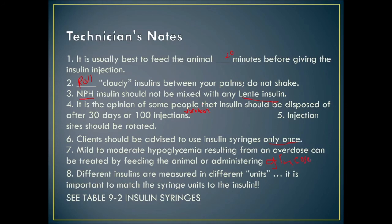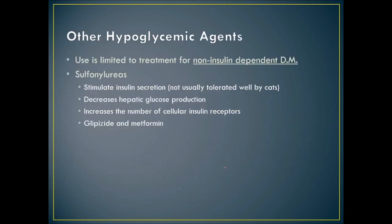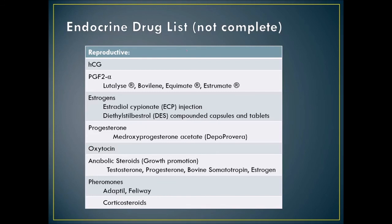Here is a list of key endocrine drugs to remember. For the reproductive system: HCG, PGF2 alpha, estrogens, progesterone, oxytocin, anabolic steroids, pheromones, and corticosteroids. For adrenal/pituitary: mitotane, ketoconazole, Anipryl, ACTH or dexamethasone for testing, Percorten, and corticosteroids. For thyroid: T4 supplements, T3 supplementation, TSH supplementation, methimazole, radioactive iodine, and Hill's y/d.